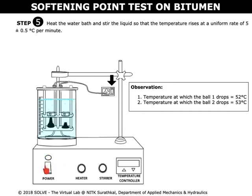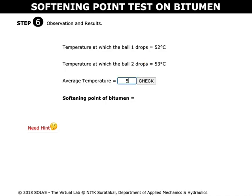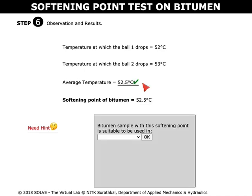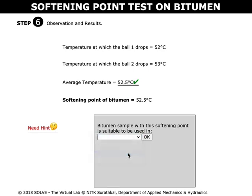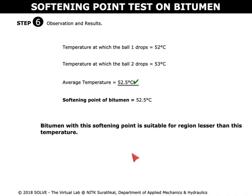Now switch off the power. These are the observations of the current simulation carried out. Calculate the average temperature and enter it into this column. The softening point of bitumen is noted. Select the correct answer to proceed to the next steps. View the inference drawn from the result.